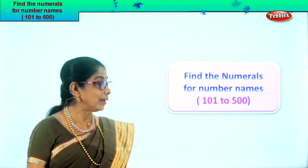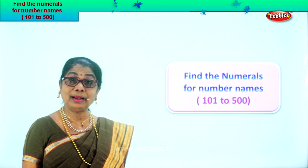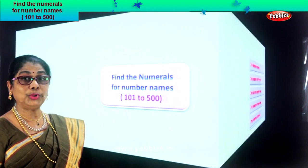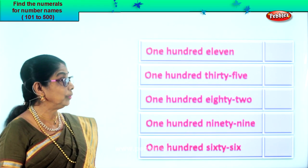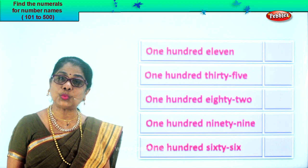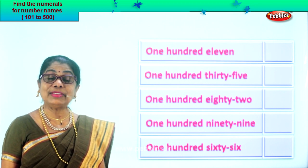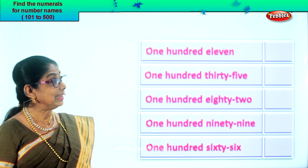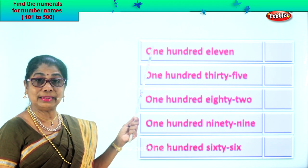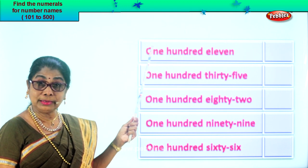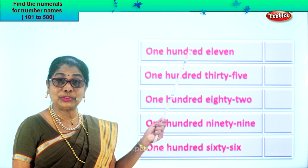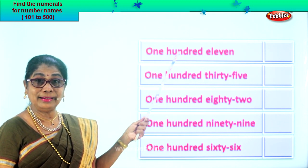Alright, from 101 to 500. Let's do. Look at what is given to you. Let's read each one and see whether we can write the numeral. Let's read what is here. One hundred. You already know the spelling of hundred.